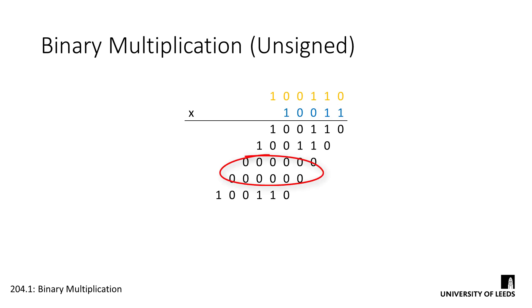There'll be a number of occasions where the partial product is just a line of zeros. It's important that you still include this in your work, just so you can easily keep track of the left shifts.